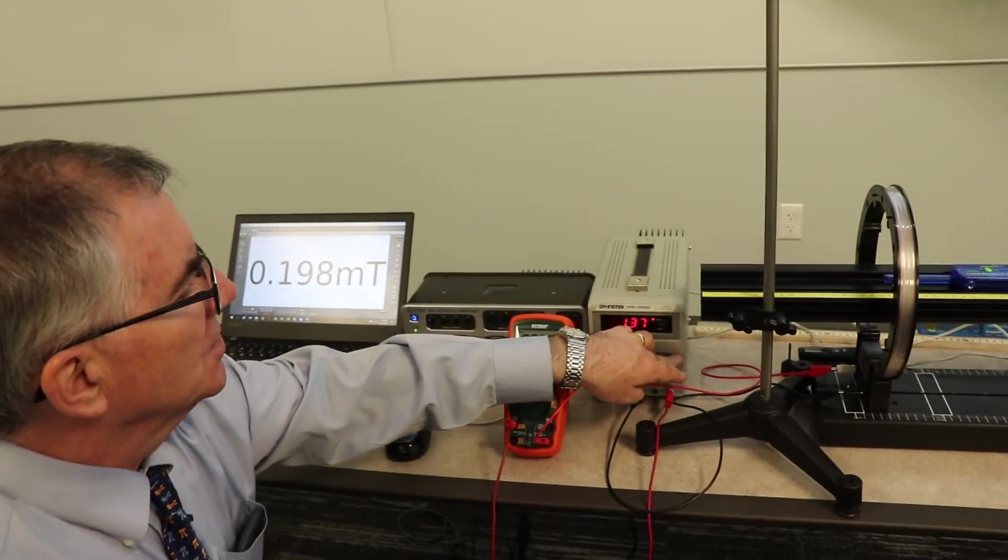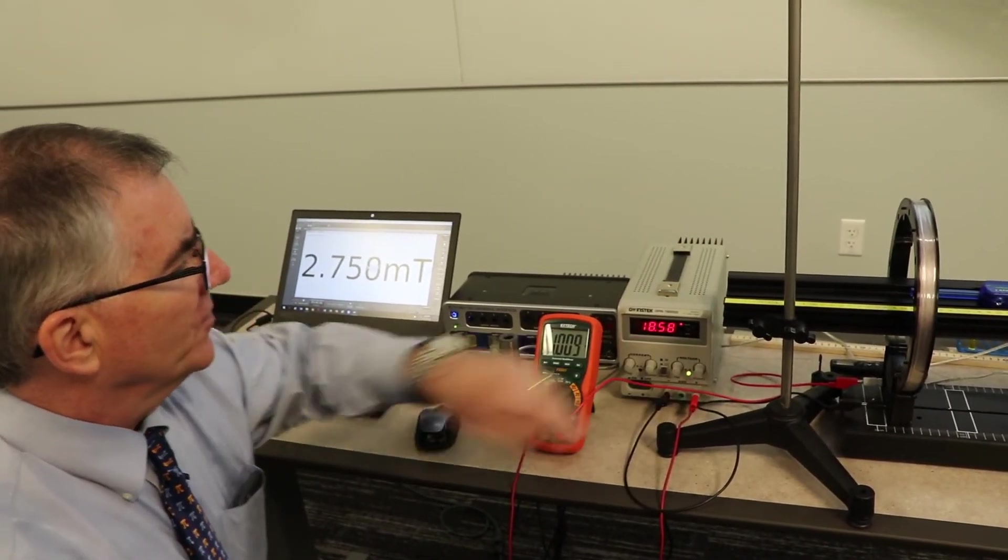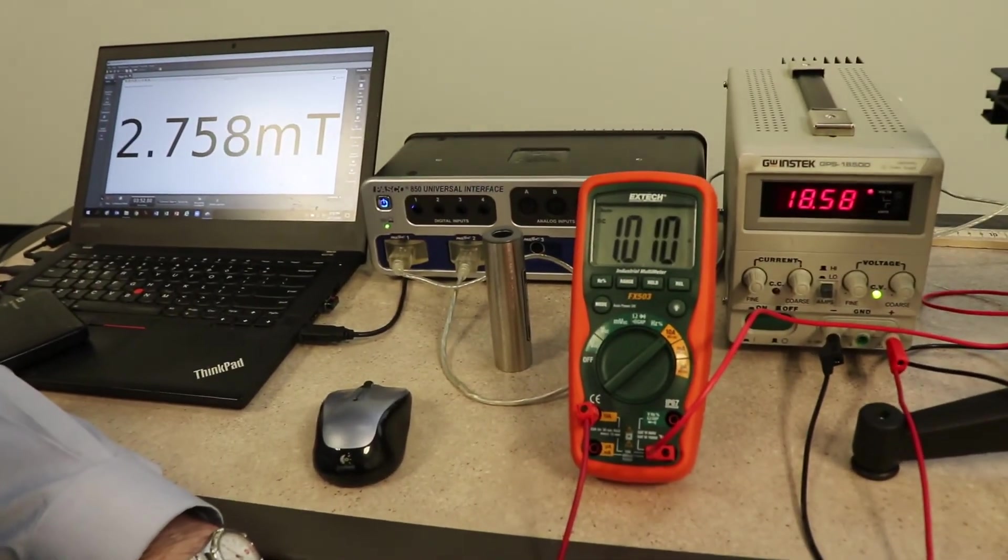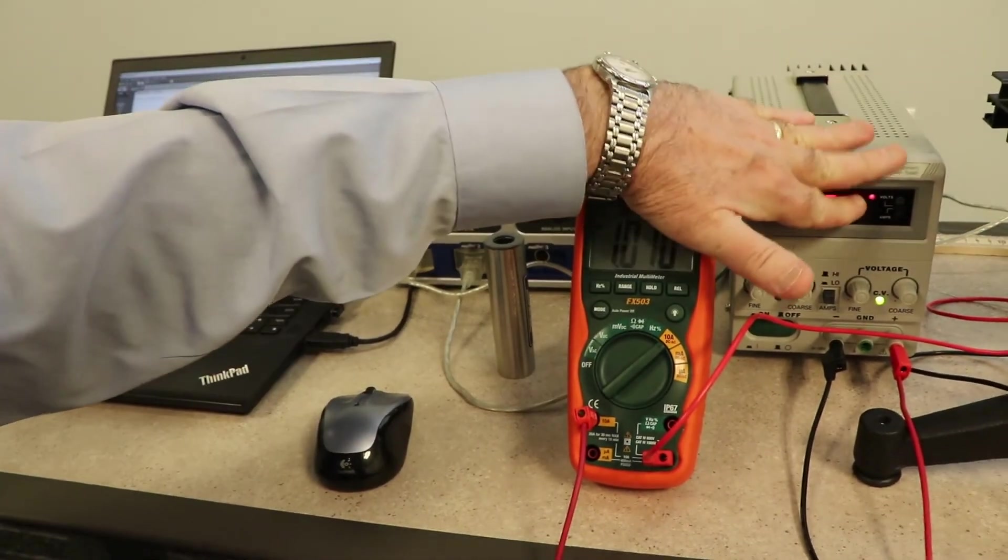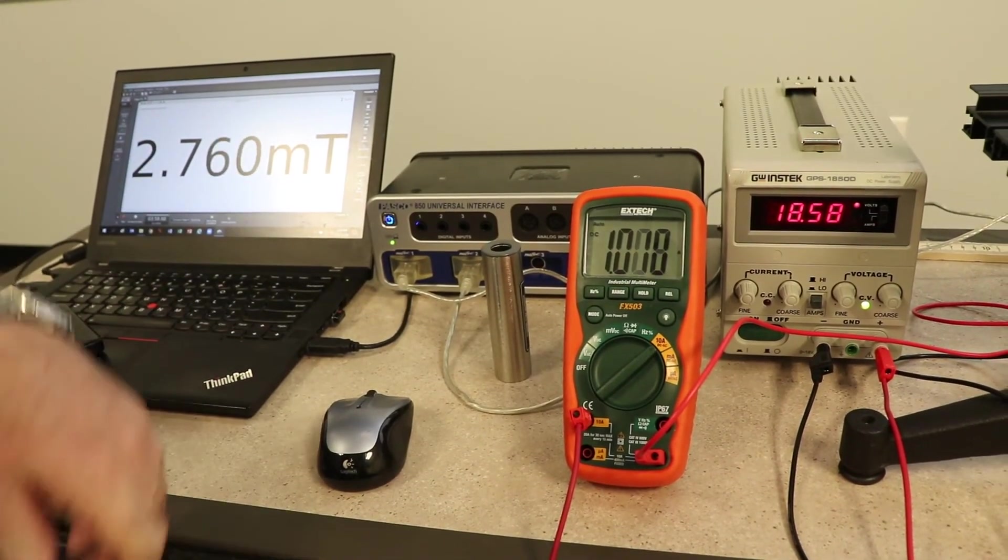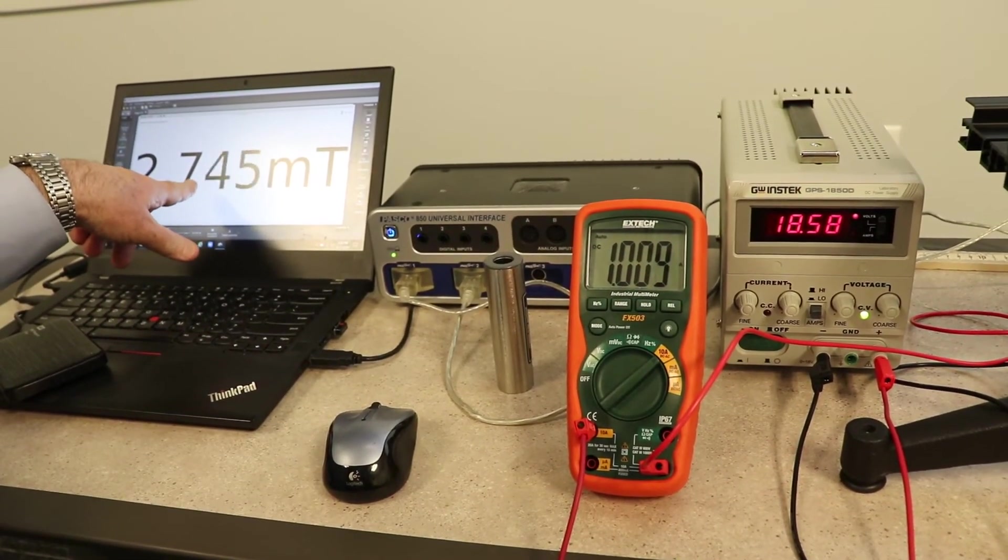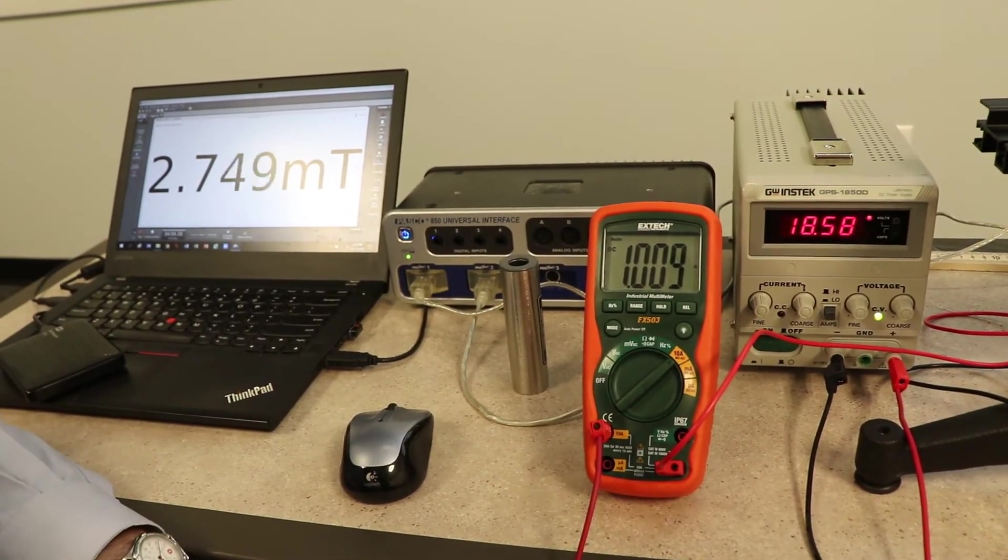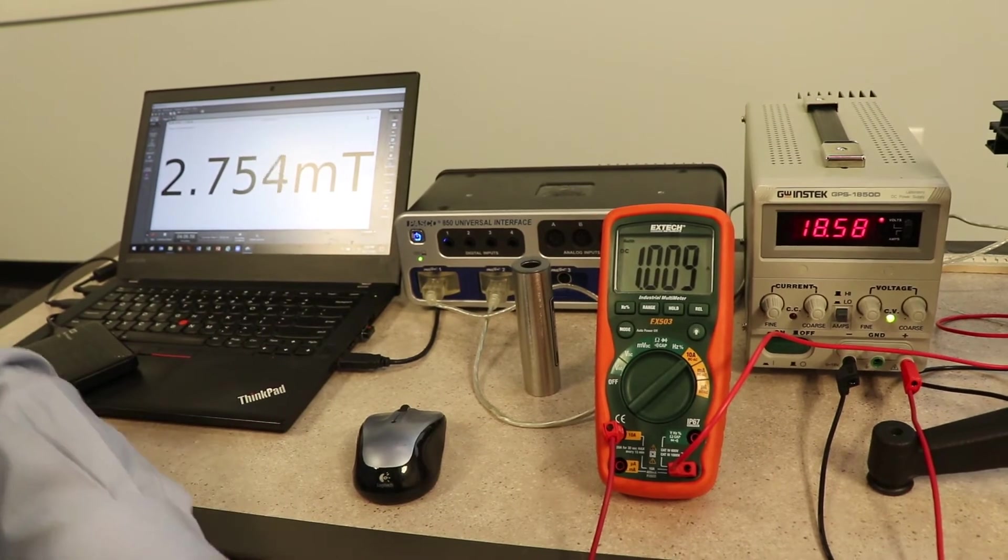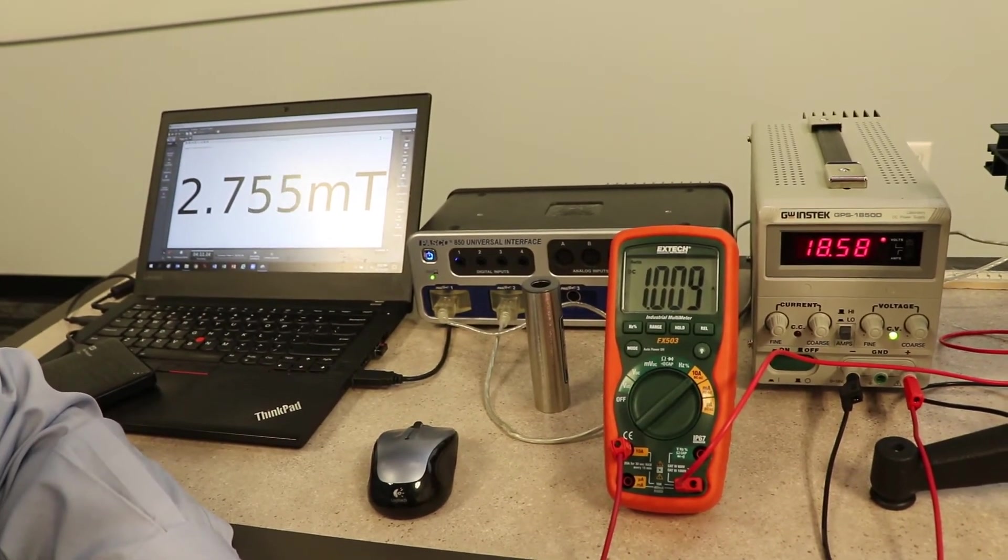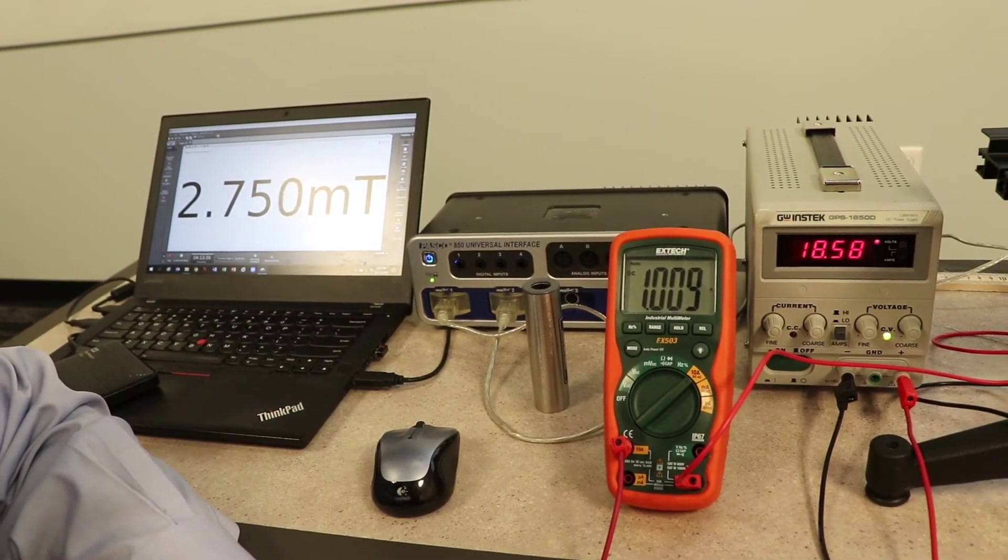Let's go for full blast - up to 18 volts. We have 1.09, 1.10 amps getting 2.765 millitesla. What do you think? 2.75, 2.750. Okay good, perfect. And that's how you do the first experiment.